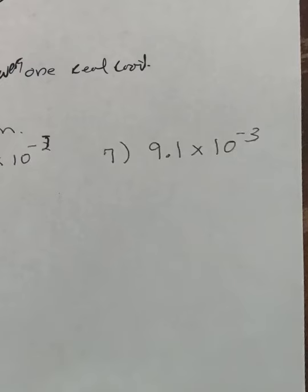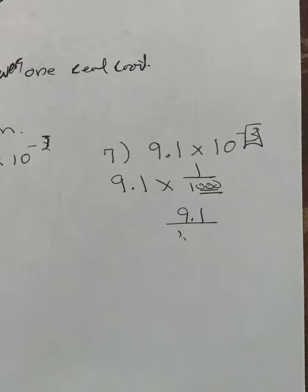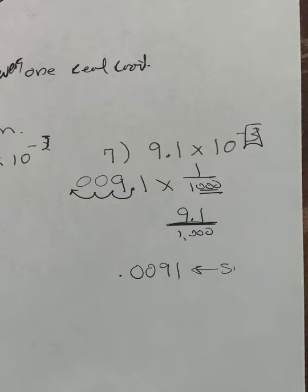Let's look at another one: 9.1 times 10 to the negative 3, which is 1 over 1,000. Multiplying by 1 over 1,000 is the same as 9.1 divided by 1,000 — so we move the decimal three times to the left: 1, 2, 3 — with three placeholders, giving 0.0091. And this is called standard form.